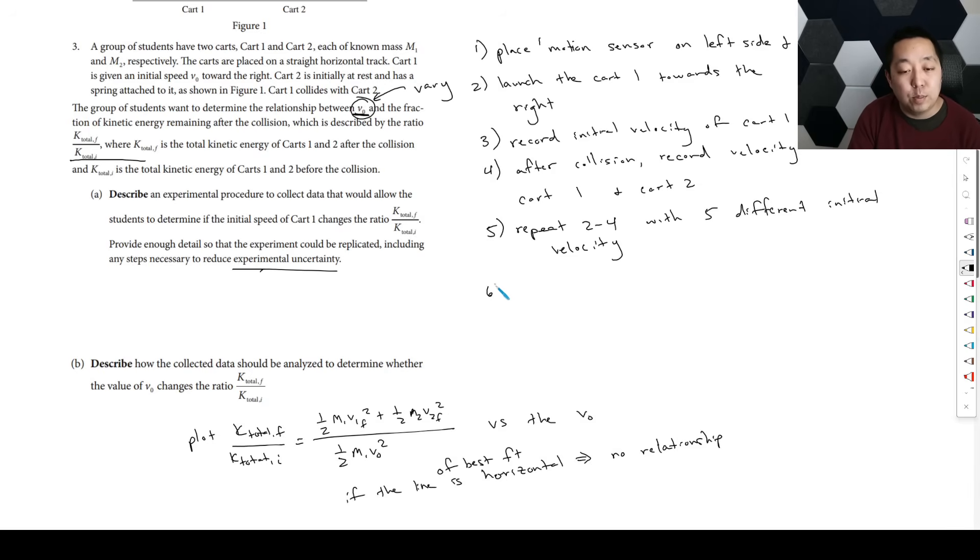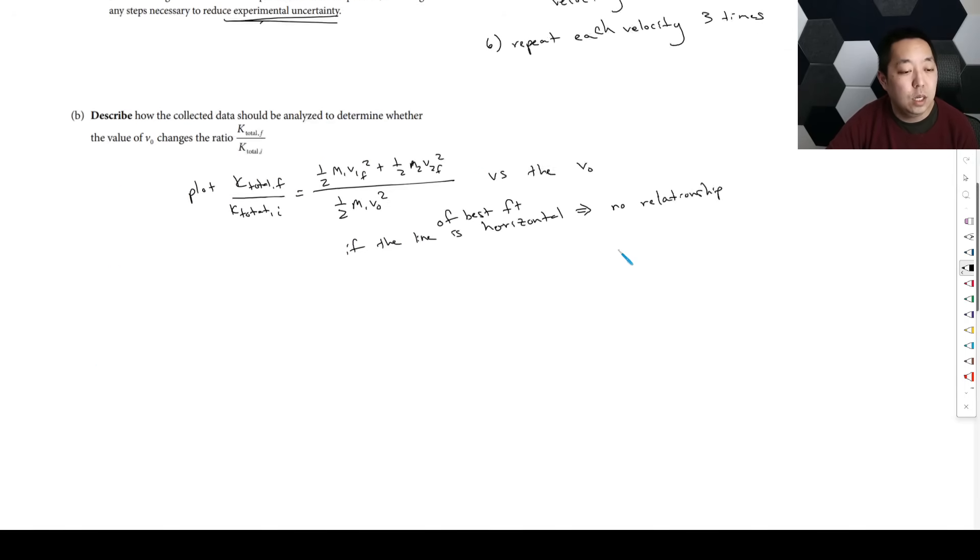Sometimes on the experimental design part, you may want to repeat each velocity three more times. Usually this varying will be enough to count as reducing the experimental uncertainty, but if you want to reduce it even more, you can just repeat each velocity three times total.